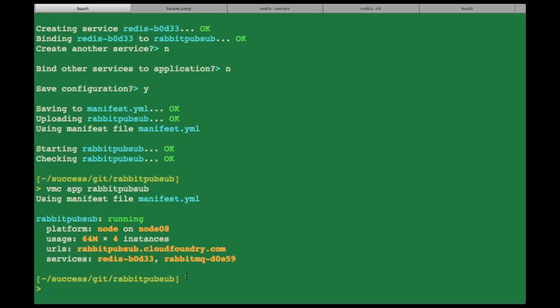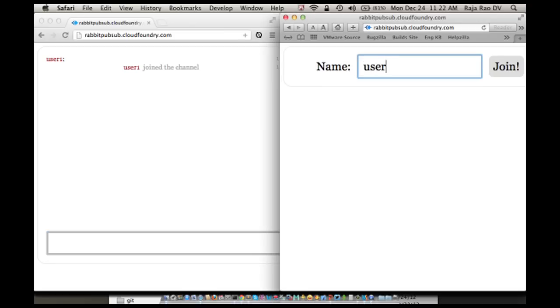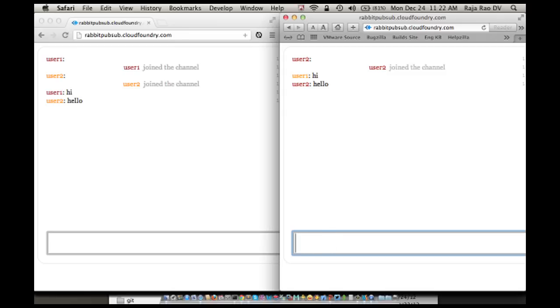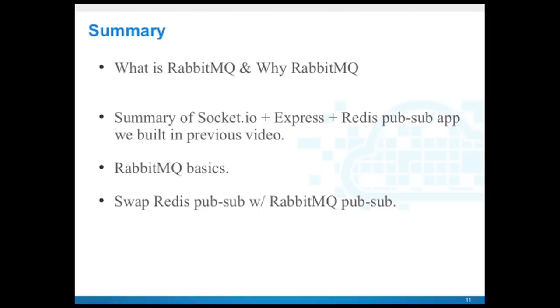Let's test if it is running. Okay, it is running and using four instances, 64MB each, and it is using two services: Redis and a RabbitMQ service. Let's test it out. So one, two, five... Okay, so it's all working.